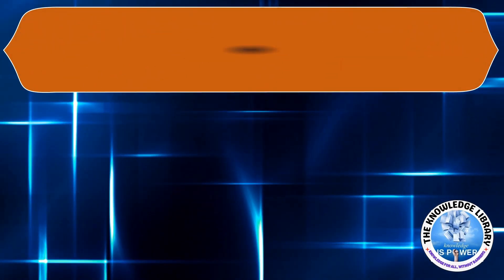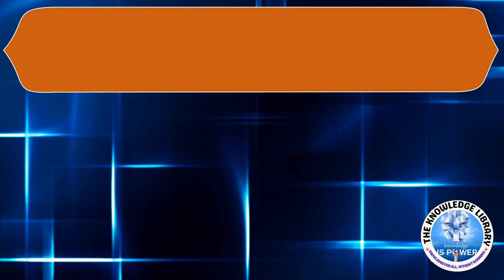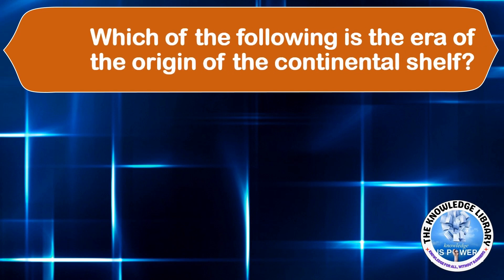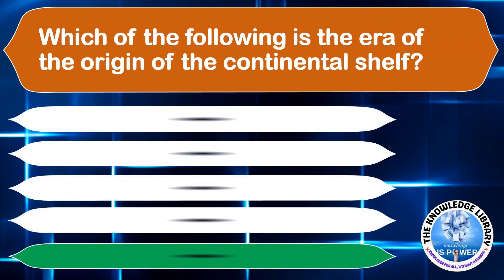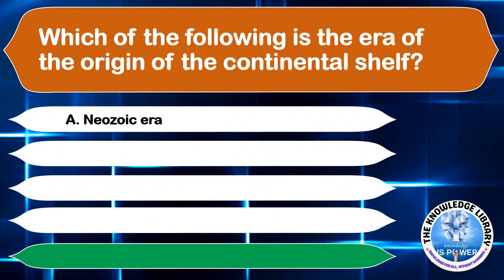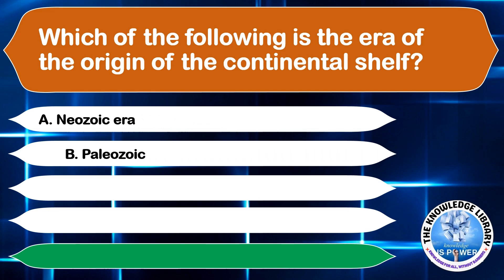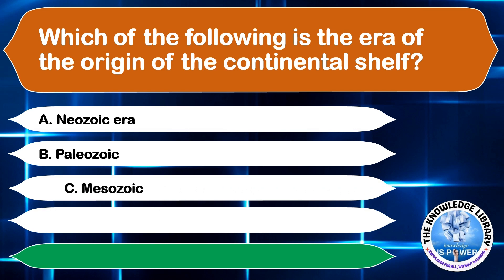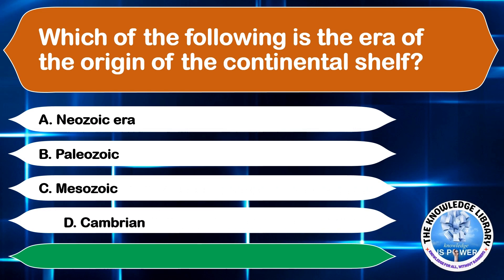Which of the following is the era of the origin of the continental shelf? A. Neozoic era, B. Paleozoic, C. Mesozoic, or D. Cambrian. The correct answer is option B, Paleozoic.